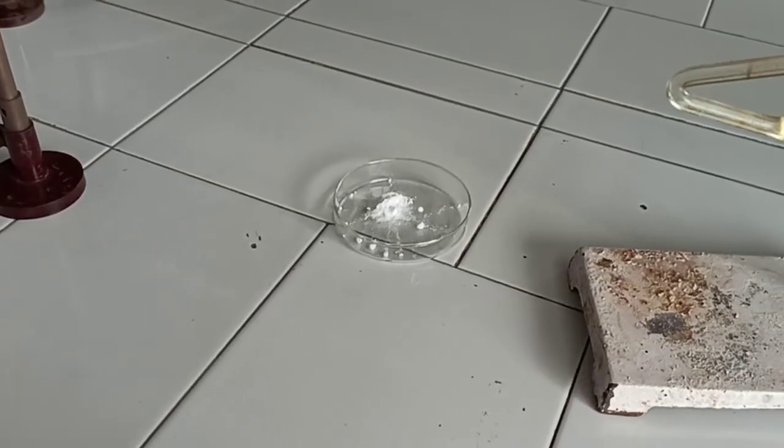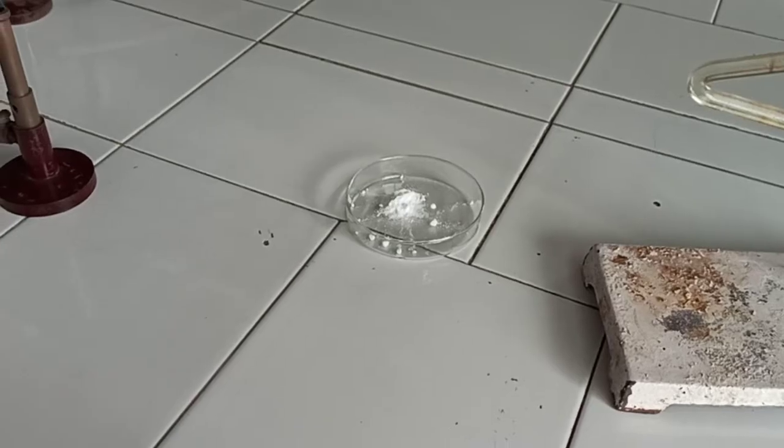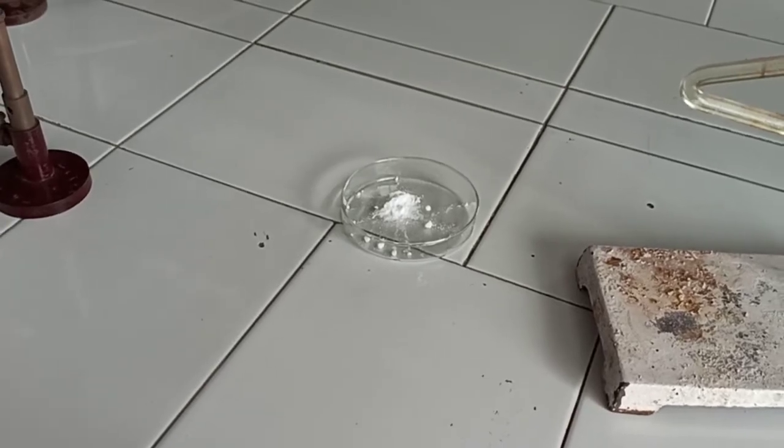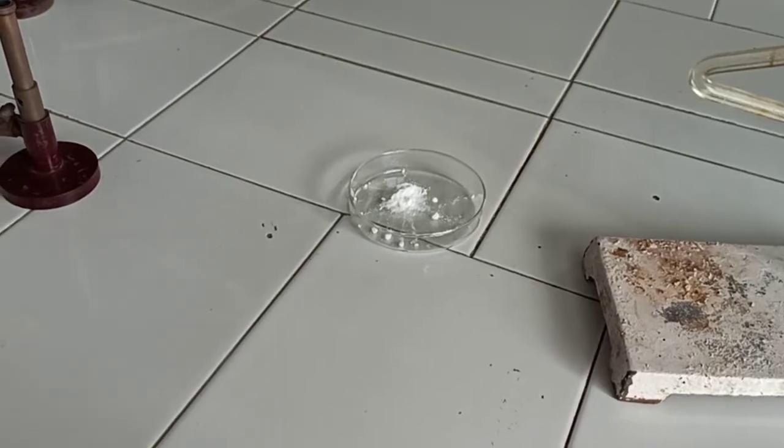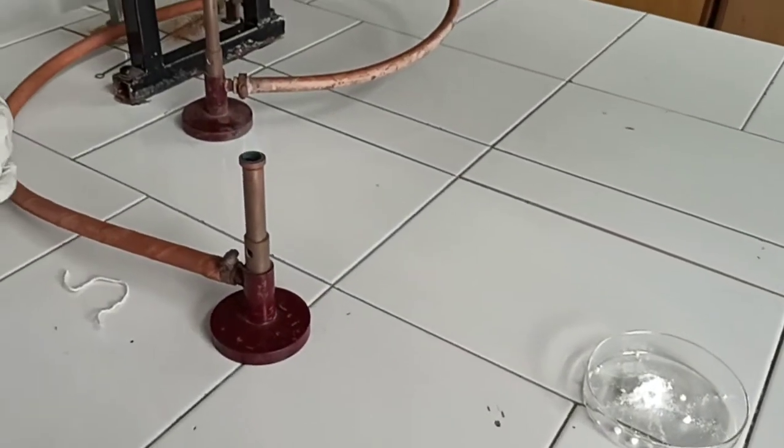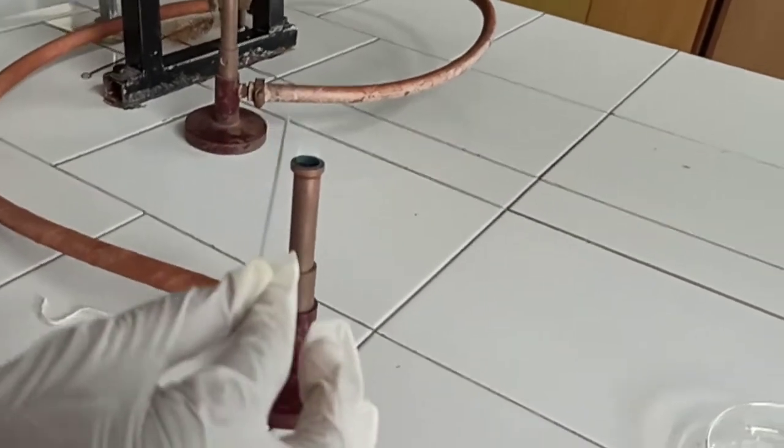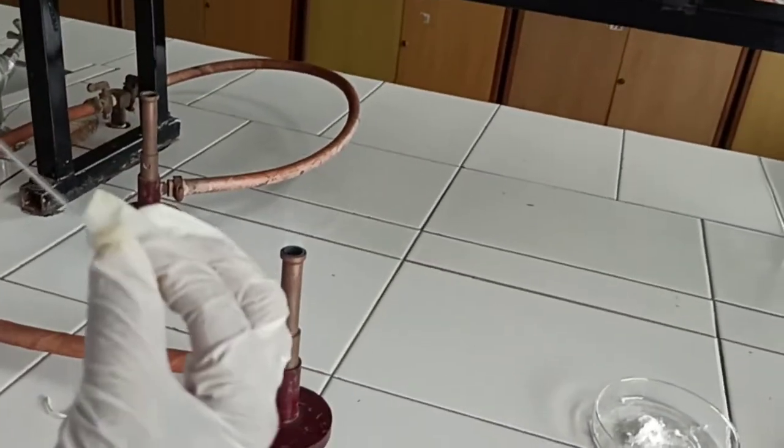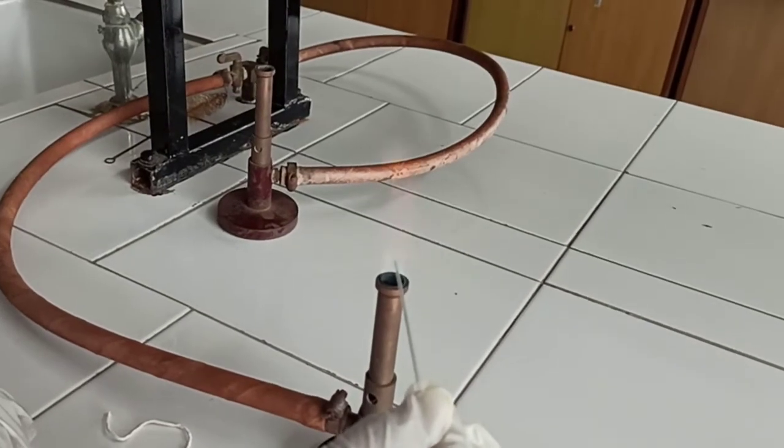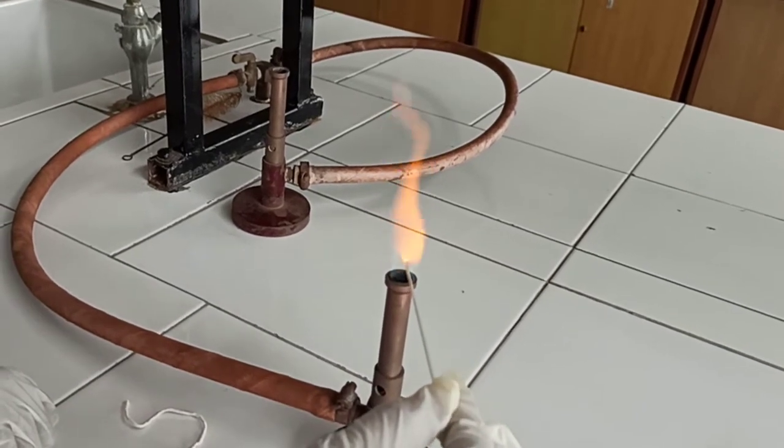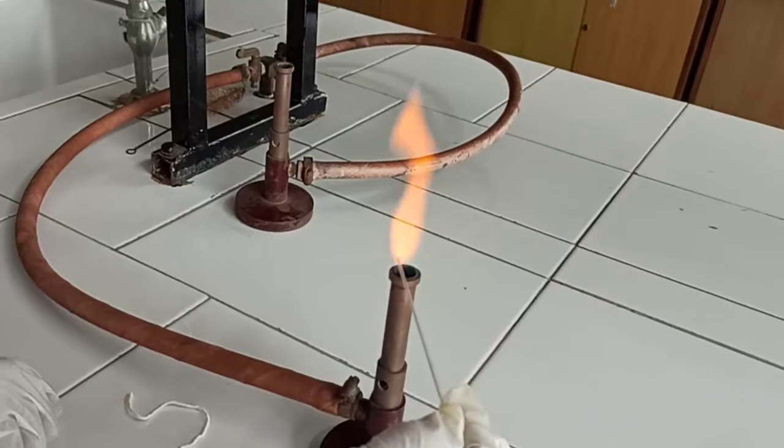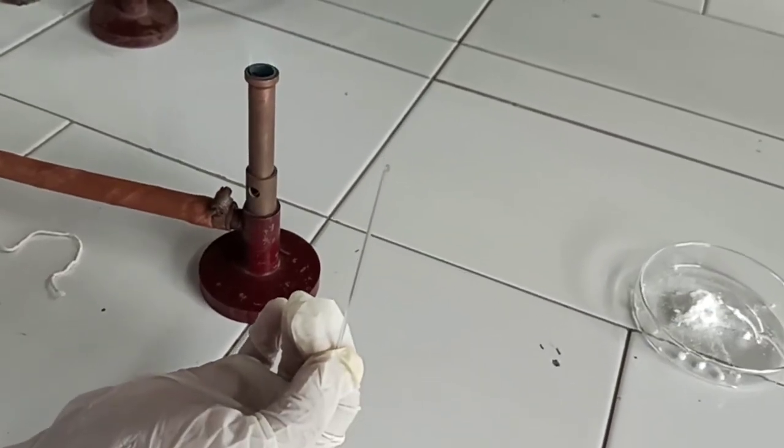See the stepwise procedure. The first step is that you have to take a capillary and seal its one end by holding it in flame for a while. See the procedure. We have to rotate that capillary tube in the blue flame so it gets sealed at one end. See, it is sealed properly.